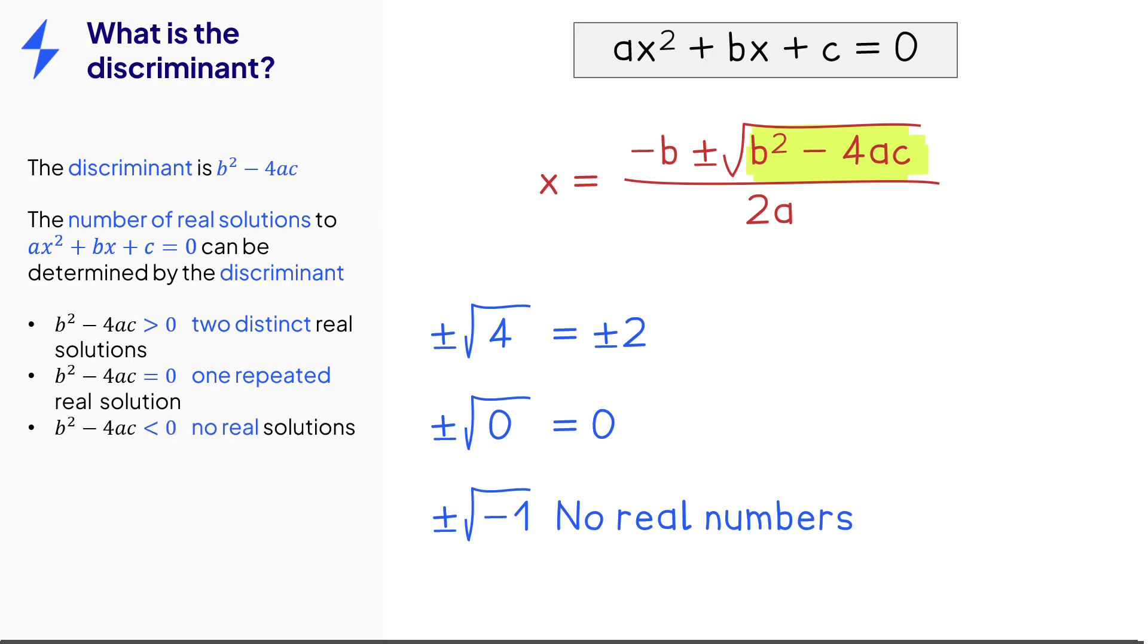Read the wording of an exam question carefully. It might simply say that the equation has real solutions. In this case, there could be one or two. So we combine the two statements and say that the discriminant is greater than or equal to zero.